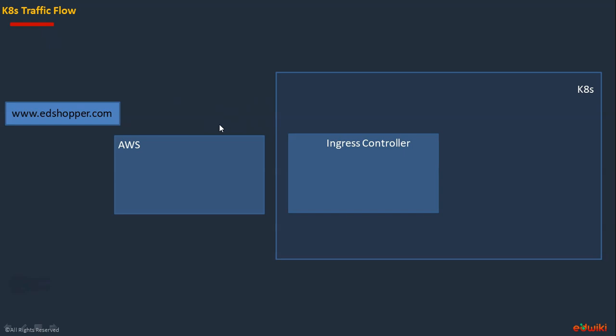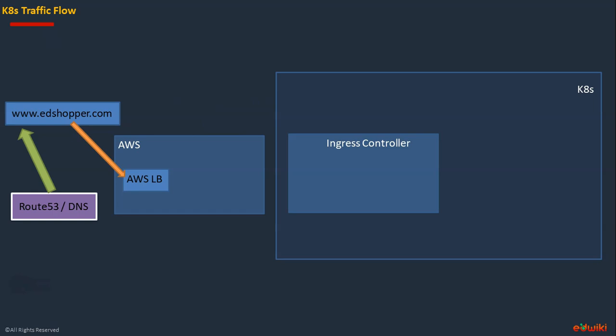Whenever you are accessing the web application on your public internet browser, like www.adshopper.com, the web client gets the resolution from DNS, or Route 53 if we are talking about AWS. Once the resolution response comes from the DNS, the traffic will be hitting the AWS load balancer. The AWS load balancer has listener rules configuration which has the details of how the traffic has to be routed to the next step.